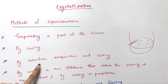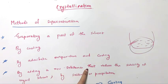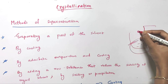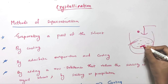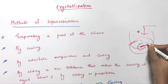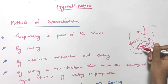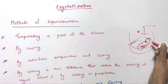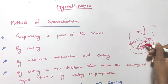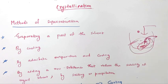The third method is by adiabatic evaporation and cooling. The fourth method is by adding a new substance to reduce the solubility of the original solvent, and this method is called salting or precipitation. When the solubility of our solvent is reduced, the solvent will not be able to dissolve as much solute, and as a result this excess amount of solute will be precipitated out.